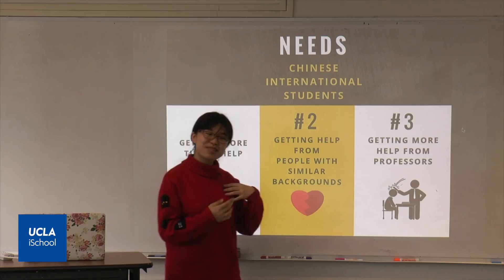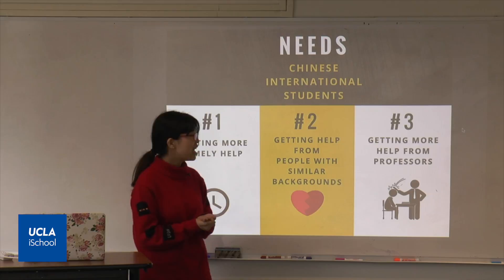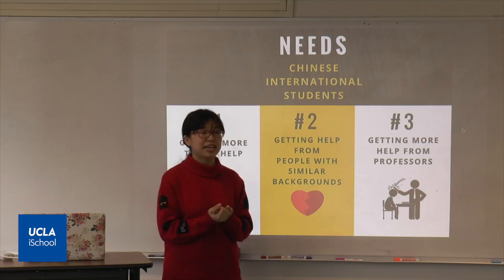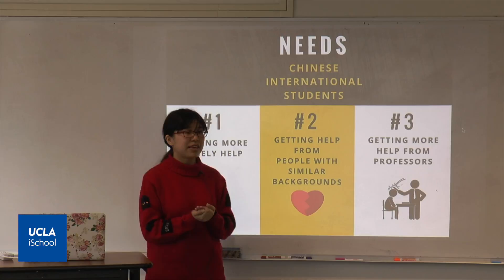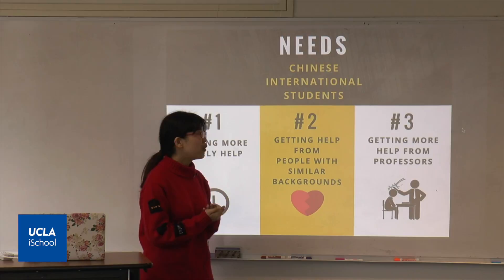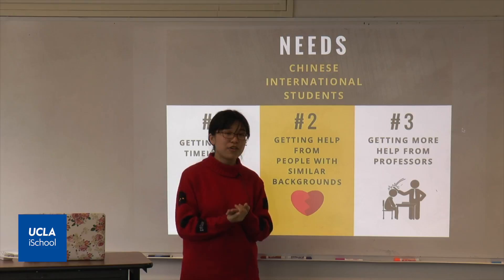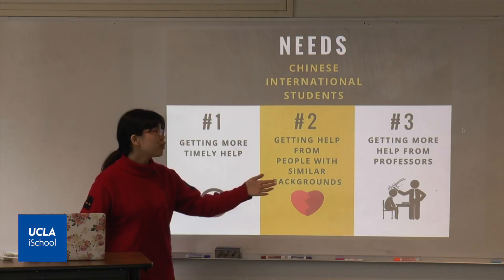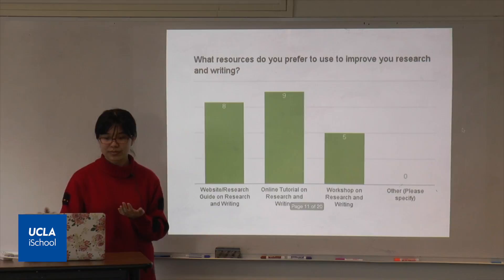It doesn't have to be people who speak Chinese or come from the same country, but it's better if there are people who understand their special needs or some of their struggles — their reluctance to ask for help, for example. Third, they want more help from their professors. This picture gets at their reluctance to ask for help whenever they encounter challenges with homework or paper writing. Sometimes they think professors are authority figures, and sometimes they think they might be asking a stupid question and the professor will punish them or think they're less capable. So on the one hand, they want more help from professors; on the other hand, they're reluctant or afraid to ask.